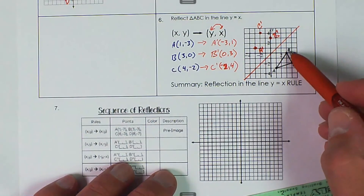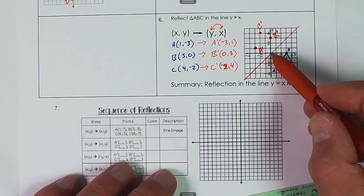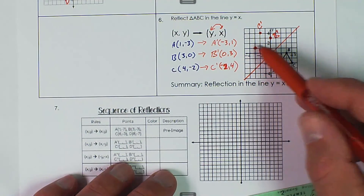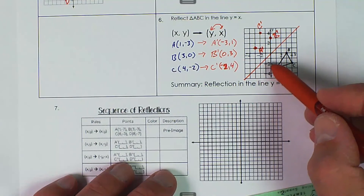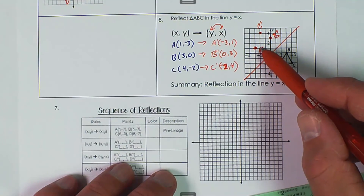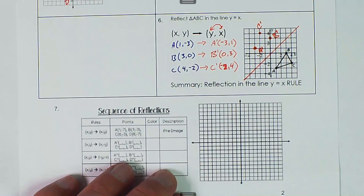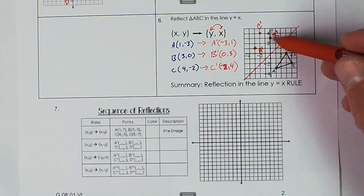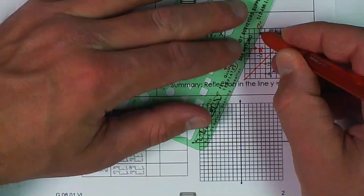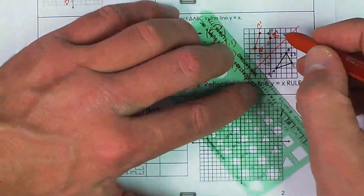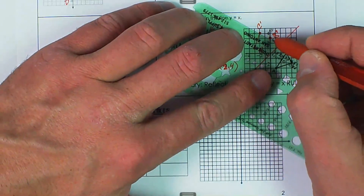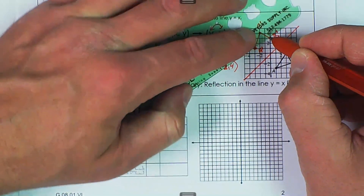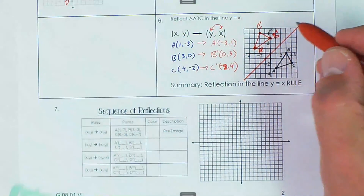If you want to count, you go one, two, three horizontally, then turn 90 degrees and go one, two, three vertically off the line. You count horizontally and then go vertical off the line y equals x. Or you can remember the rule: whenever we flip over the line y equals x, all you do is switch the ordered pair — y becomes first and x becomes second.